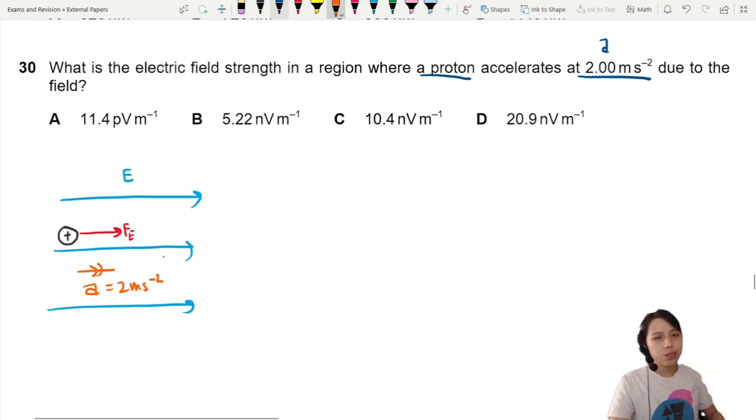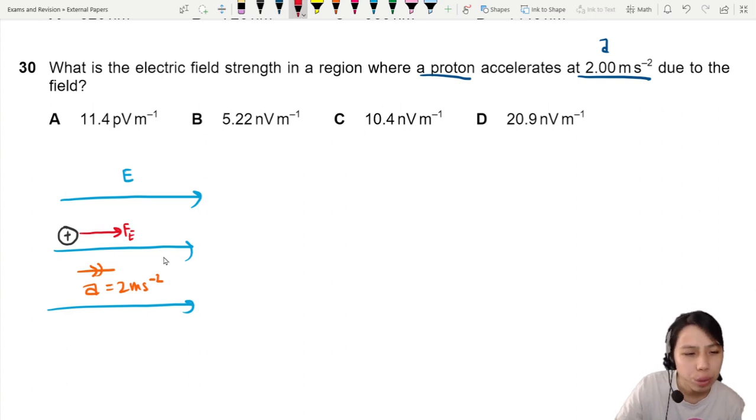If you want to find the electric field strength, where does that come into play? F equals QE is where you can start. So maybe we go back to Newton's second law, F equals MA.